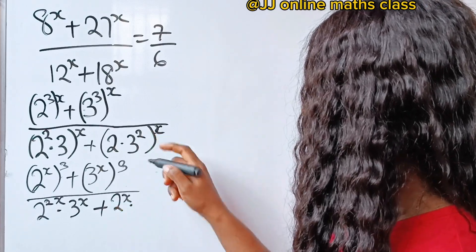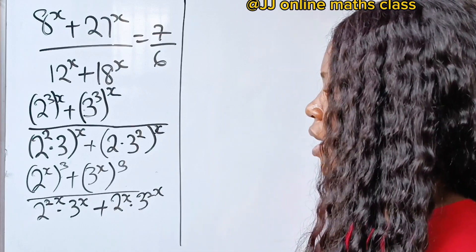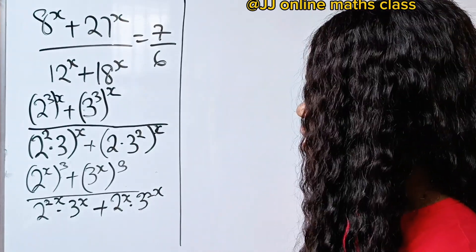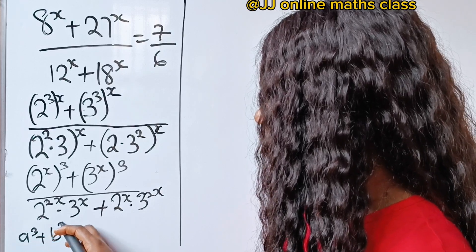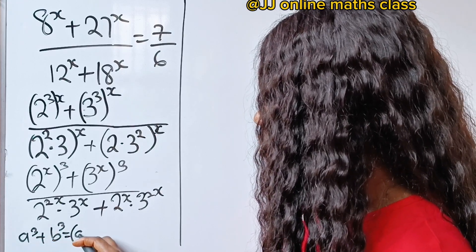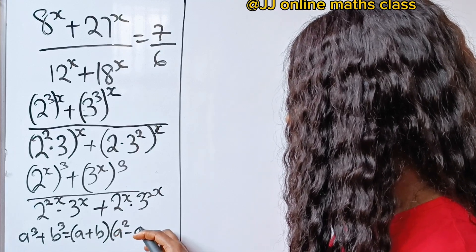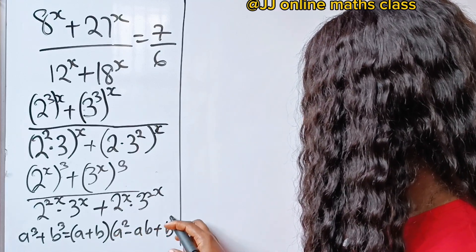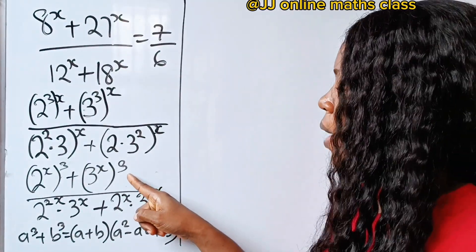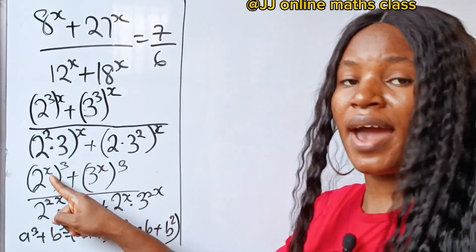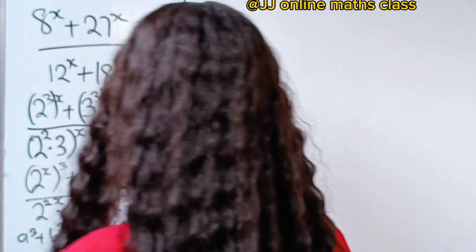Opening the brackets, we have plus 2 to the power of x multiplied by 3 to the power of 2x. Now recall the algebraic identity: a³ + b³ equals (a + b)(a² − ab + b²). We'll apply this to our numerator, where a is 2 to the power of x and b is 3 to the power of x.